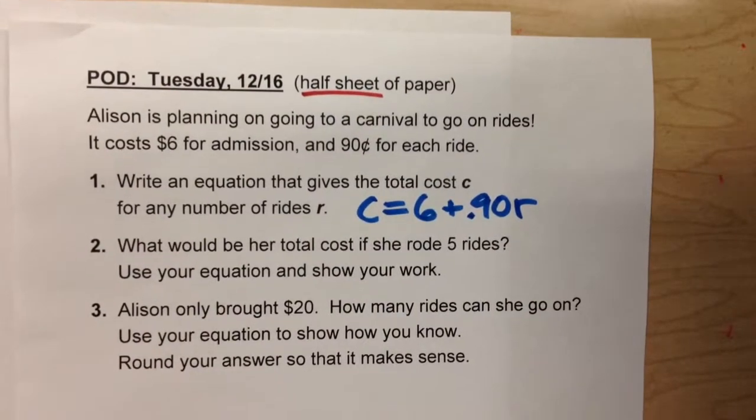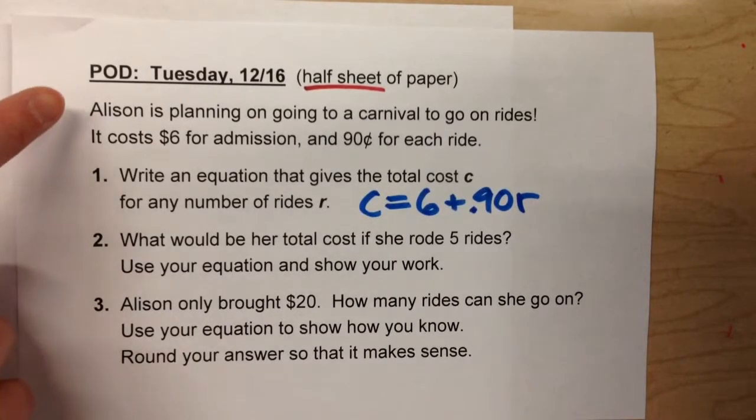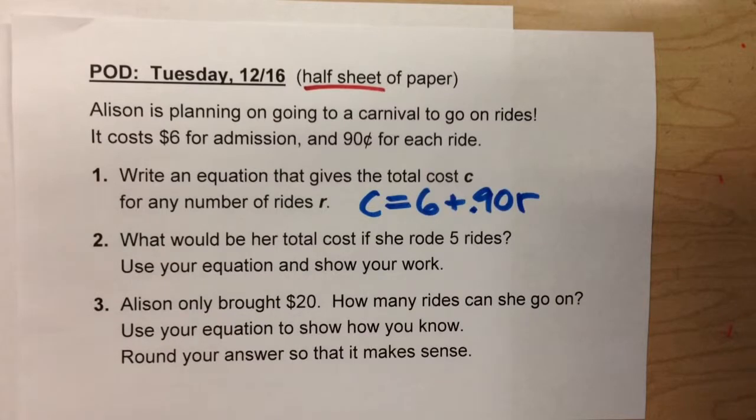Today, we learned how to solve problems using a graph. Here's today's problem of the day. Allison is planning on going to a carnival to go on rides. It costs $6 for admission and $0.90 for each ride.